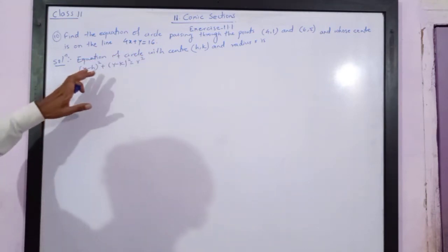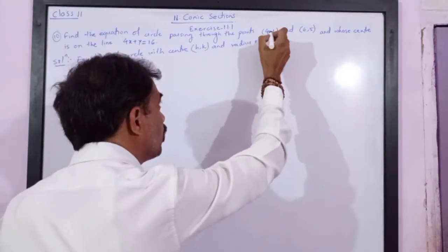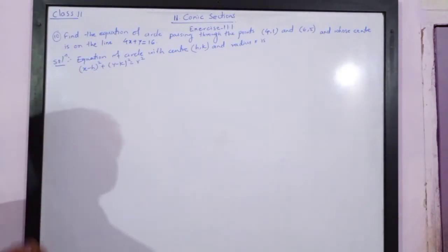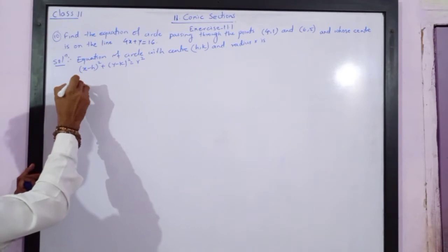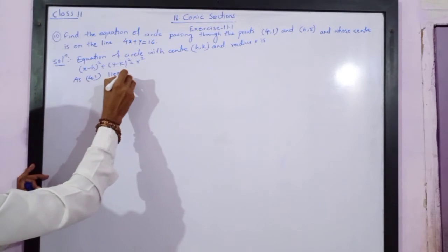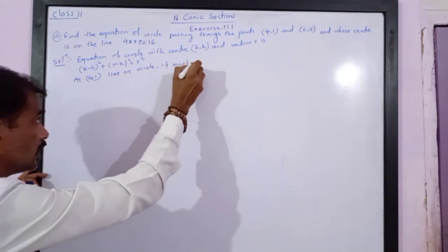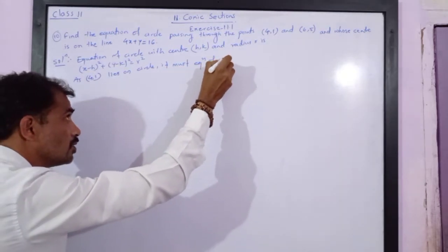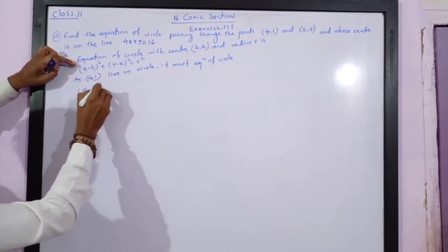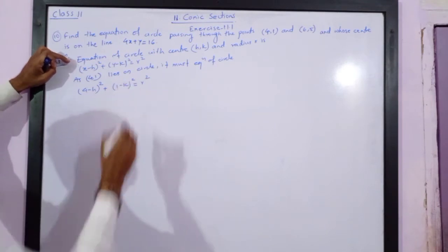If this equation passes through the point (4, 1), it must satisfy the equation of the circle. So, as (4, 1) lies on the circle, putting x = 4 and y = 1, we get: (4 − h)² + (1 − k)² = r². This is equation number 1.